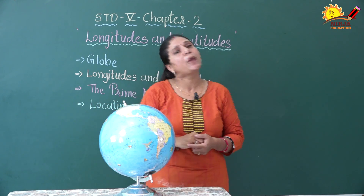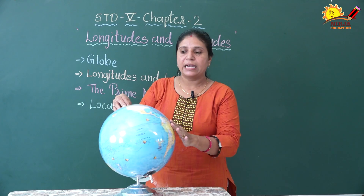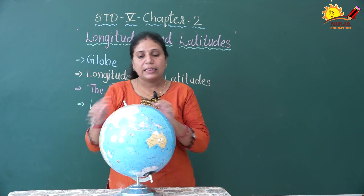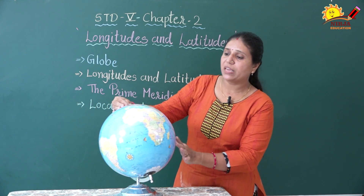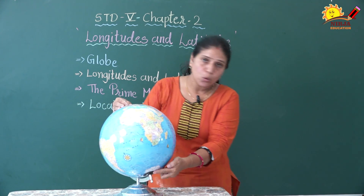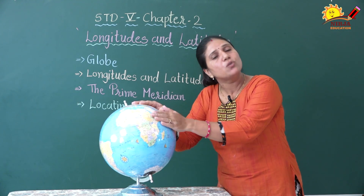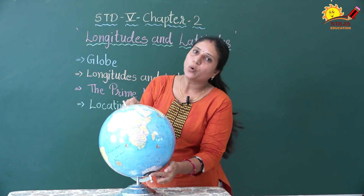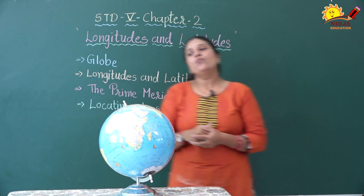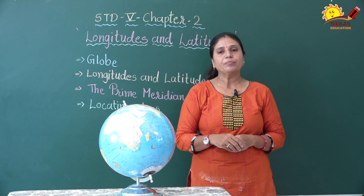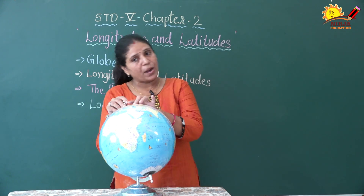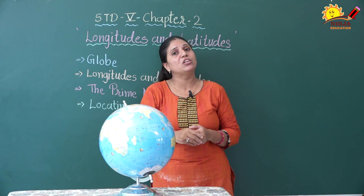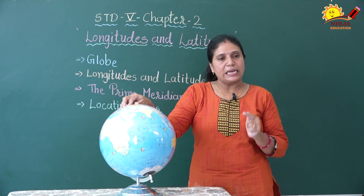Now we are going to know about the prime meridian. The prime meridian divides our earth into two equal parts. It is the standard longitude line, and it passes from the north pole to the south pole. The prime meridian passes through the Royal Greenwich Observatory in London and is called the prime meridian line.